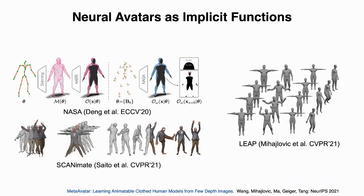Modeling neural avatars as implicit functions is a rising topic in the community. NASA is among the first who proposed to model minimally clothed bodies as articulated implicit functions. LIP is a direct extension to NASA, which can generalize across different body shapes.